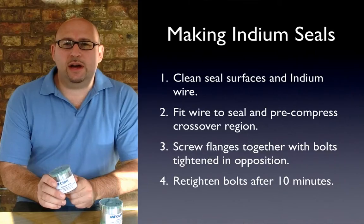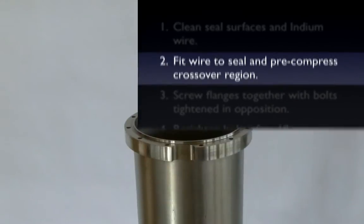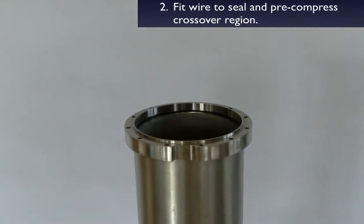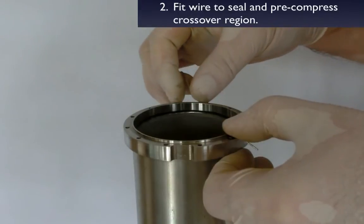Having cleaned everything thoroughly, the next stage is to fit the wire and create the wire crossover joint. A sensibly designed flange will give the lower flange a lip so that you're not having to fight gravity. Run your fingers around the seal to tighten the indium against the lip.